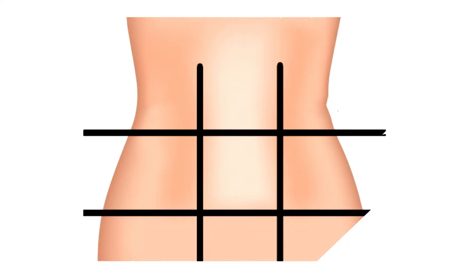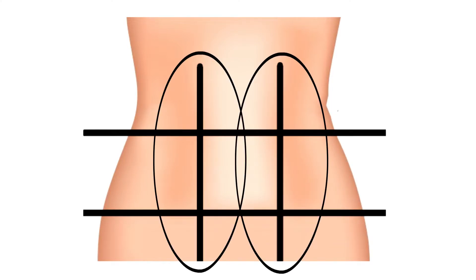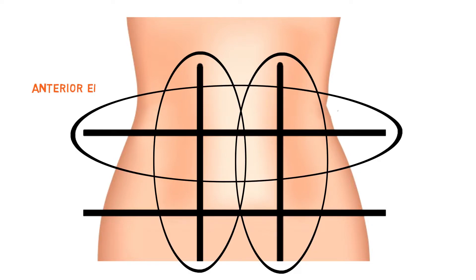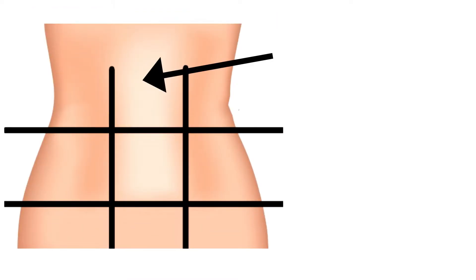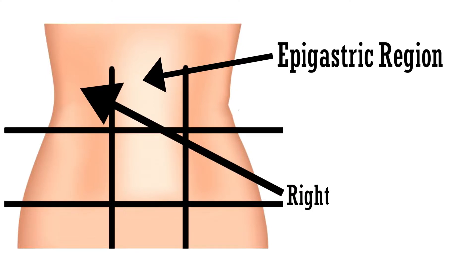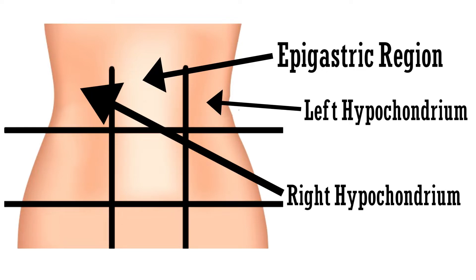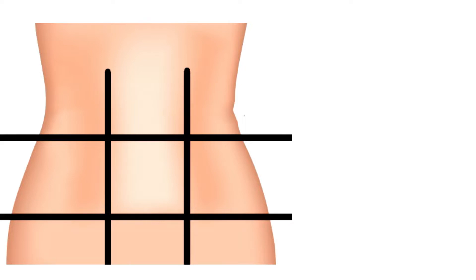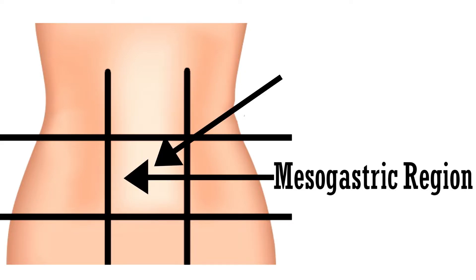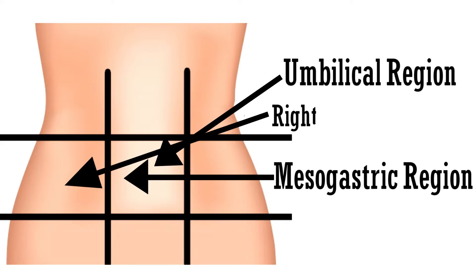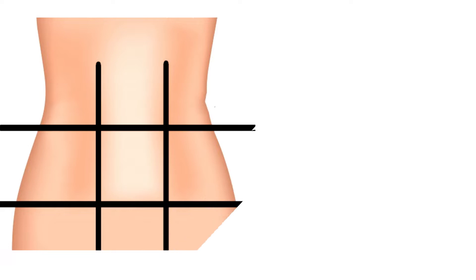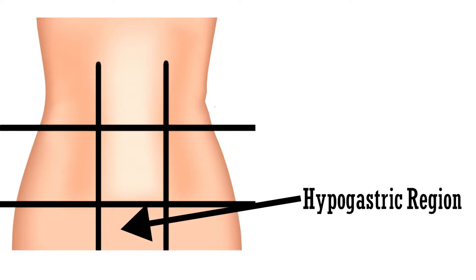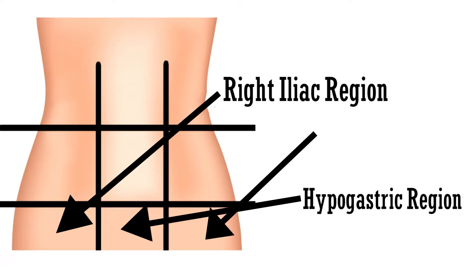Let's have a look. In this image, these vertical lines pass along the lateral borders of the rectus abdominis muscles. This upper horizontal line passes through the anterior end of the 10th rib, and this lower horizontal line passes through the anterior superior iliac spine. This region is the epigastric region. On the right is the right hypochondrium, and on the left is the left hypochondrium. Coming to the middle regions, this is the mesogastric region, which has the umbilicus or the umbilical region. To the right of the mesogastric region is the right lumbar region, and to the left is the left lumbar region. Last are the lower regions: this is the hypogastric region, to the right is the right iliac region, and to the left is the left iliac region.